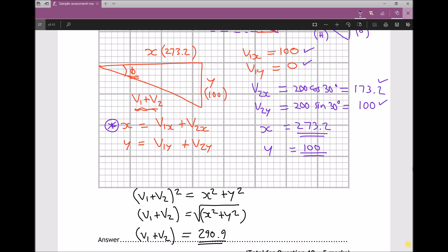We've found the magnitude of V1 plus V2, which is the amplitude. We still need to find phi. We'll use the equation: tan phi equals opposite over adjacent. Taking tan to the minus one of each side, theta equals tan to the minus one of opposite over adjacent. Opposite is our y value and adjacent is our x value. Therefore, phi equals tan to the minus one of 100 over 273.2. Important: make sure your calculator is in degrees. Tan to the minus one of 100 over 273.2 is 20.1 degrees.